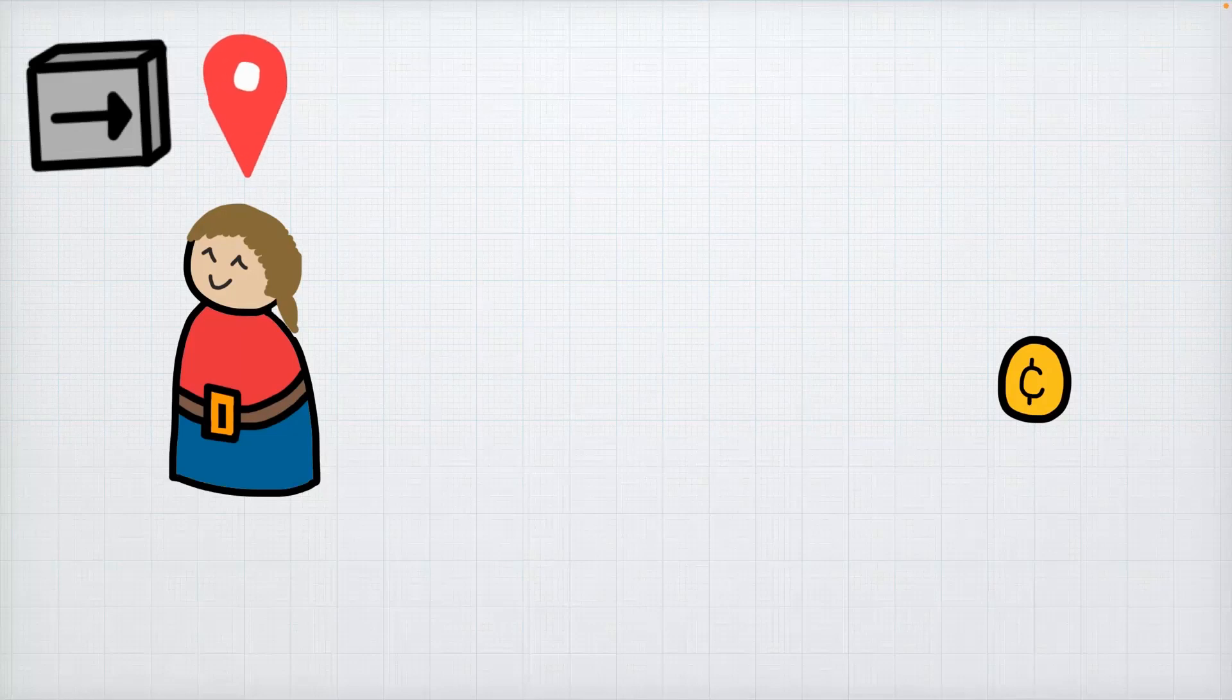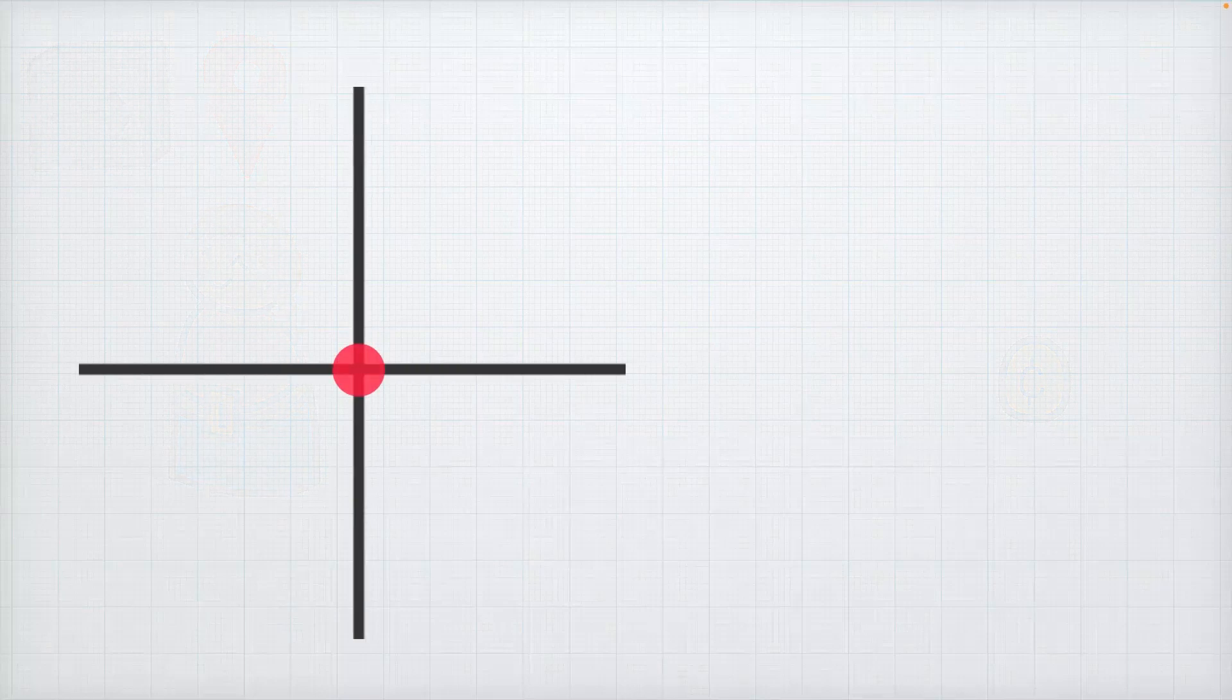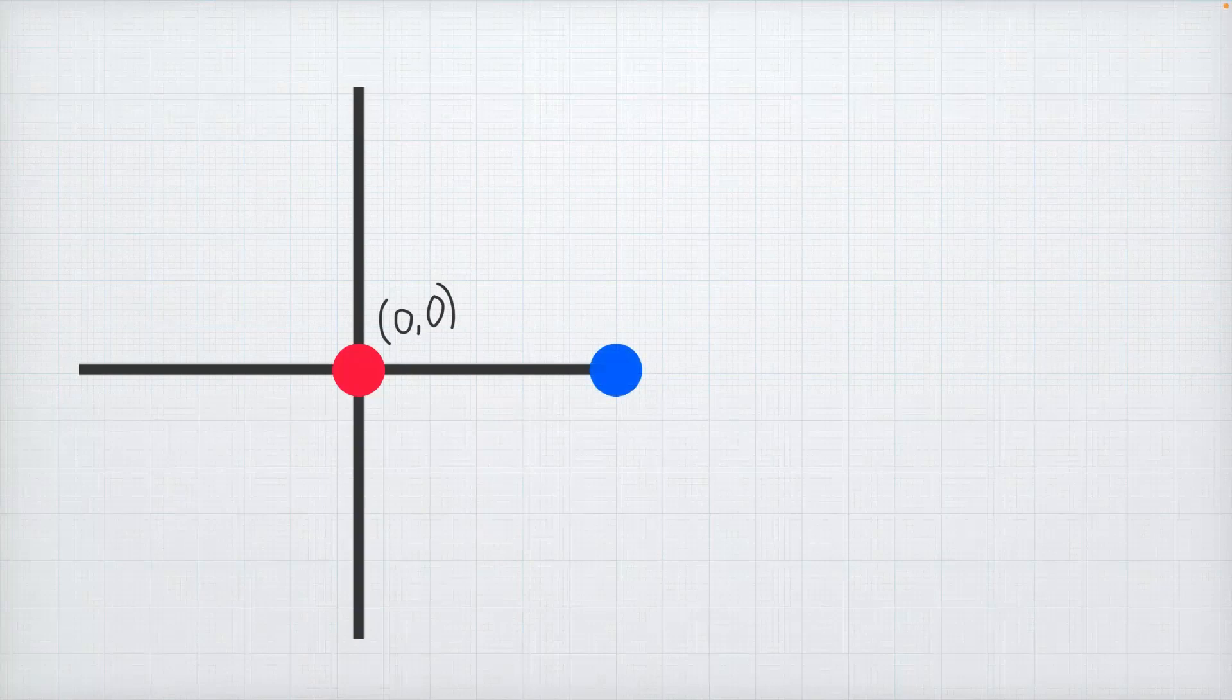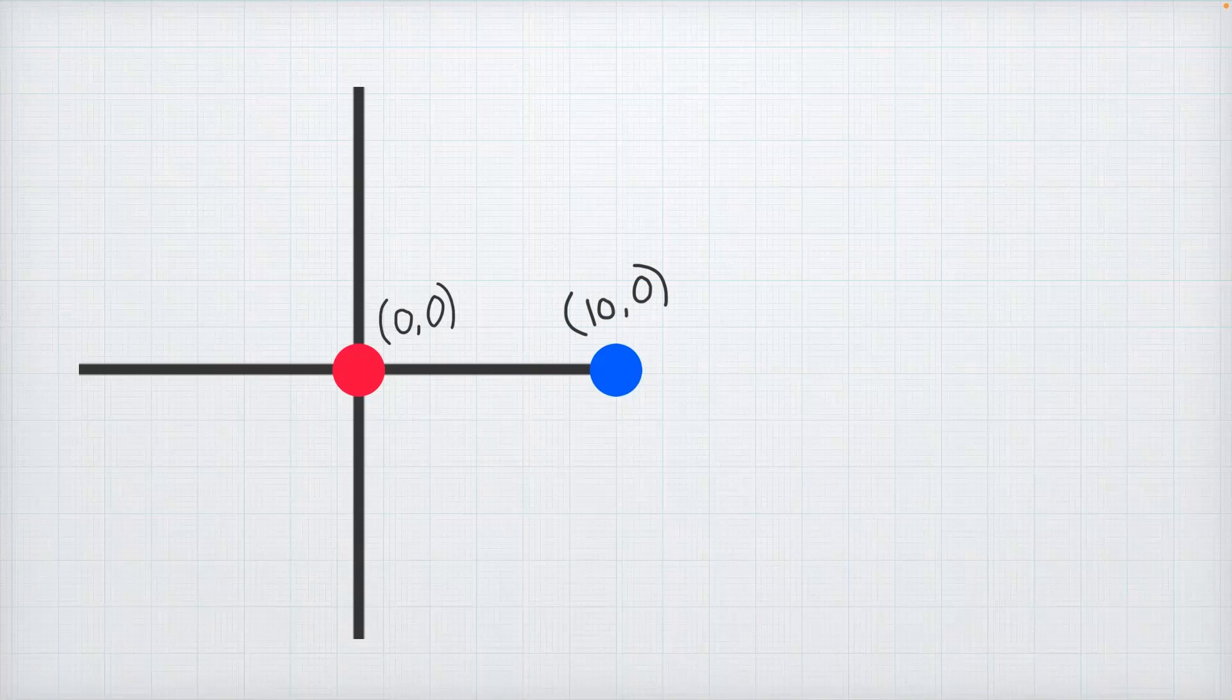Let's not think of Tom as a character but let's think of Tom as a point on a graph. So here's Tom and his position is at 0,0. Now let's say that this blue dot is the coin that we want him to go to and its coordinates are at 10,0. How do we move Tom's dot from here to the blue dot?